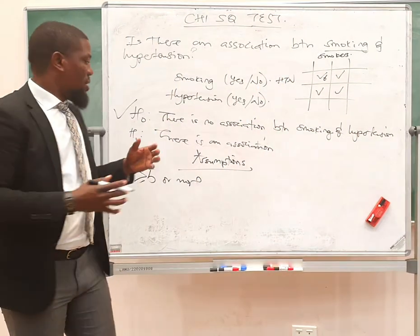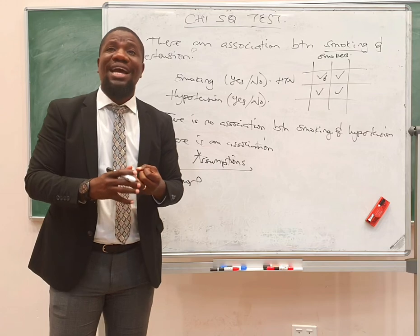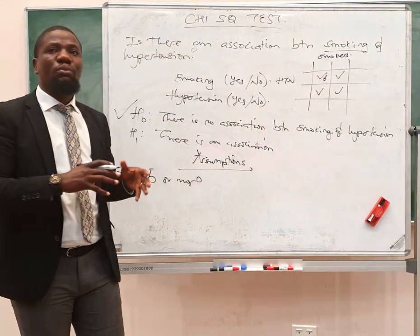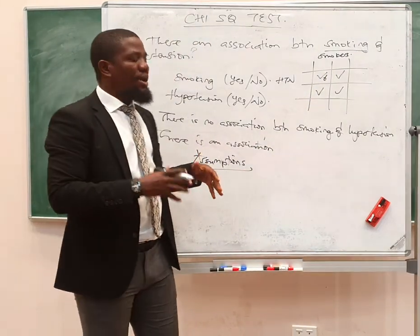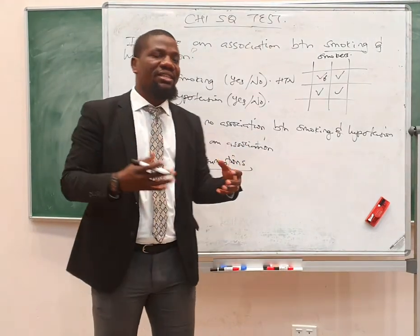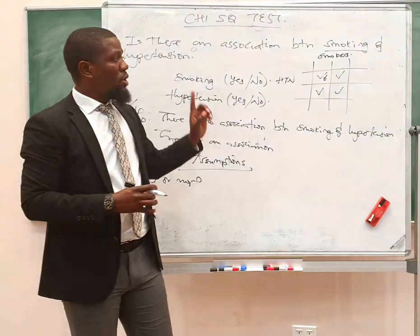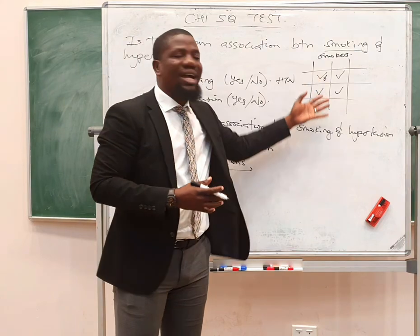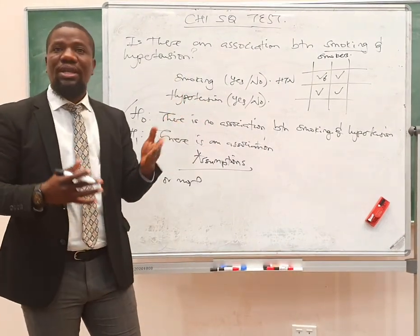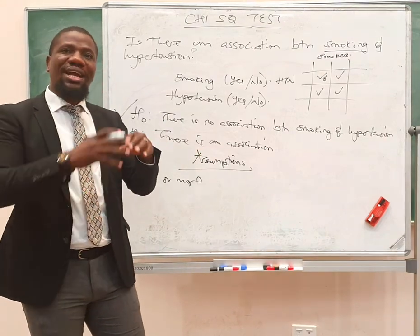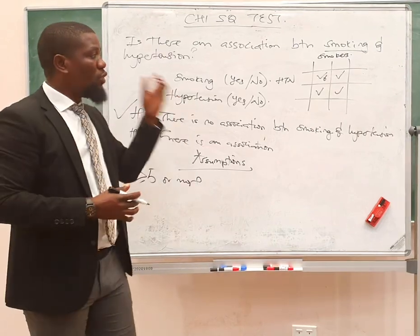Another assumption is that the sampling of participants into the study should be random and independent. The sampling should be independent, meaning you cannot have a situation where the sampling process removes the independence. It should be both independent and random. The final assumption is that the distribution should follow the chi-square distribution, and we will use the chi-square distribution table in order to make our conclusions. These assumptions are very crucial for the chi-square test.